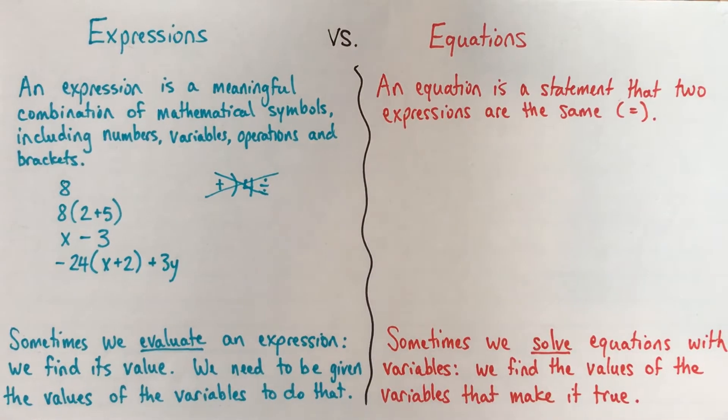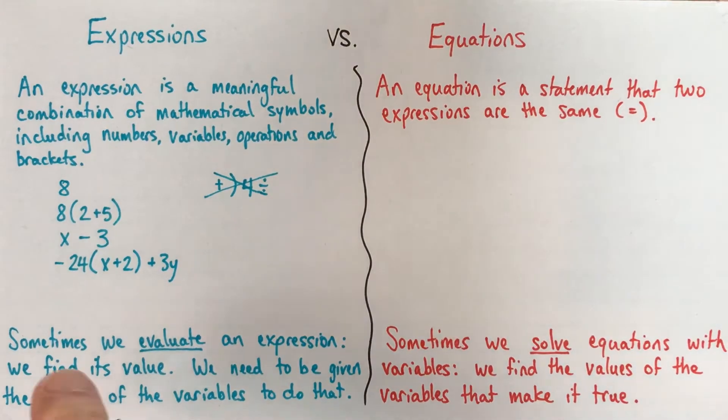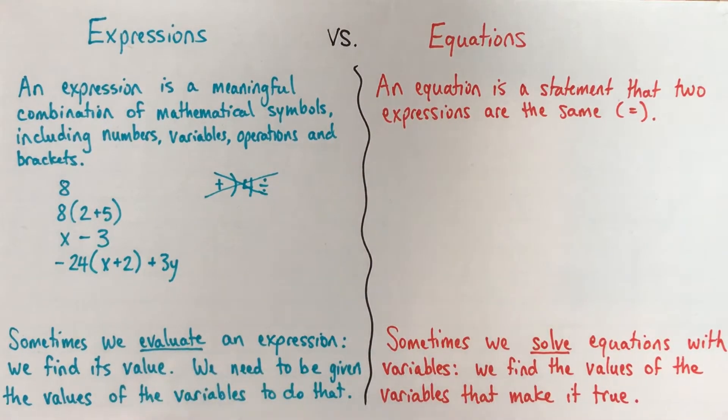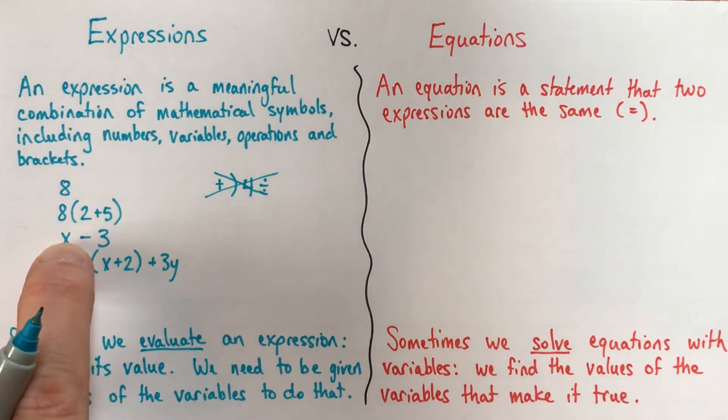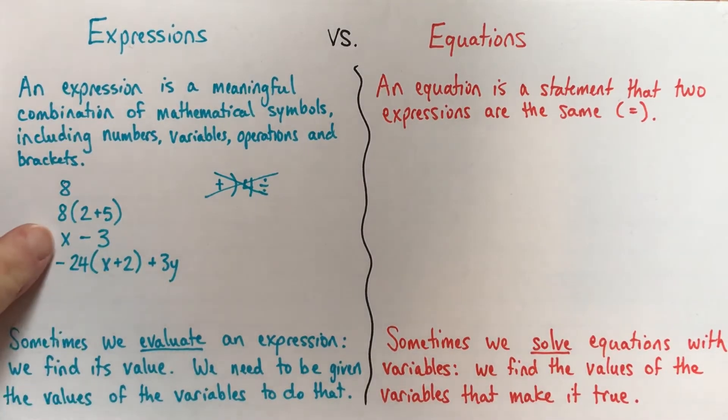Sometimes we evaluate an expression. So what that means is you find the value, and it's got the word value in there, we find the value of the expression. To do that, if the expression has variables in it, like these last two, you need to be told the value of the variables, alright? If you just have x subtract 3, you can't tell anybody what that is worth unless you know what x is equal to.